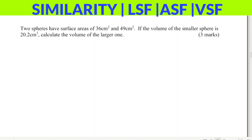Two spheres have surface areas of 36 cm² and 49 cm². If the volume of the smaller sphere is 20.2 cm³, calculate the volume of the larger one.